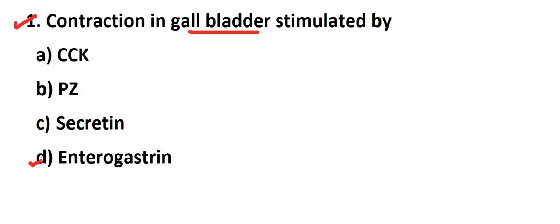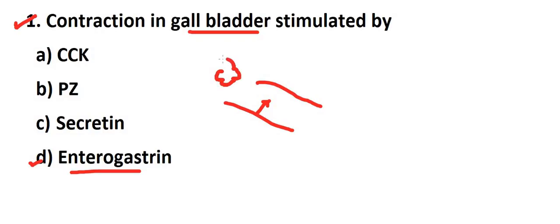Let's look at the options. What is enterogastrin? When is it secreted? When we have eaten food and the fat content is more than a certain amount, then enterogastrin will be secreted. Sometimes it is also secreted when sugar or protein is in excess, but mainly it is secreted when fat is more.